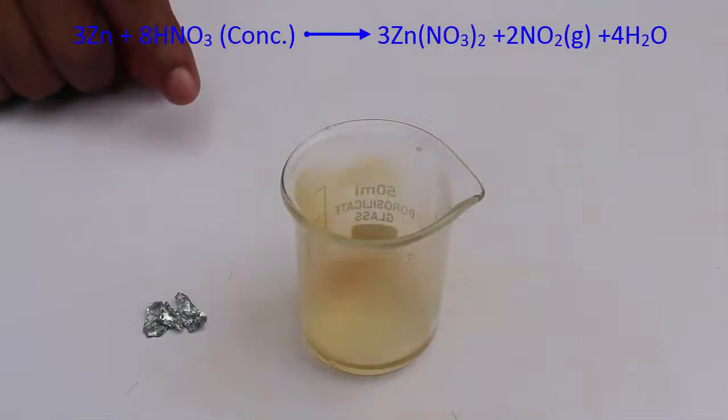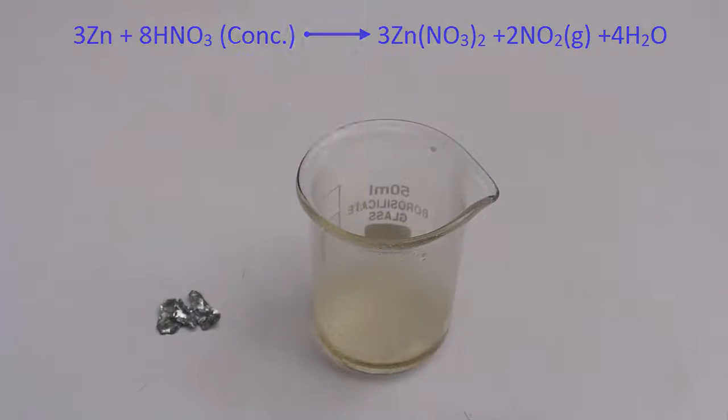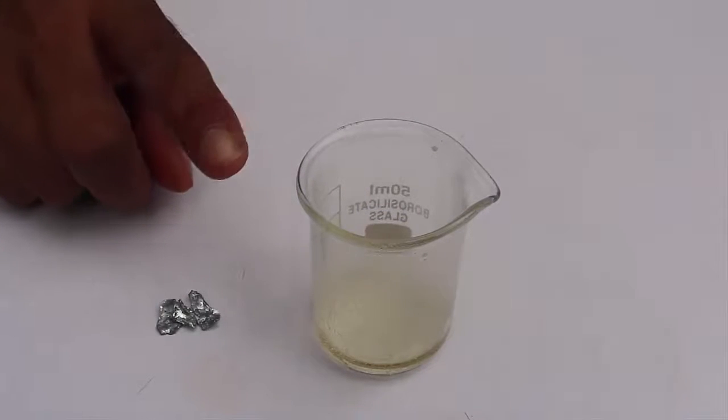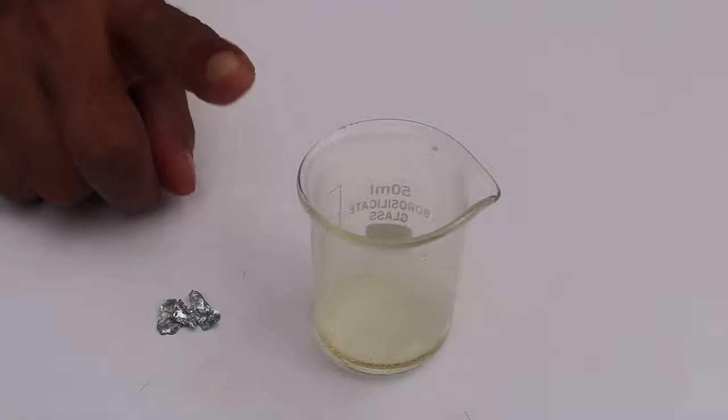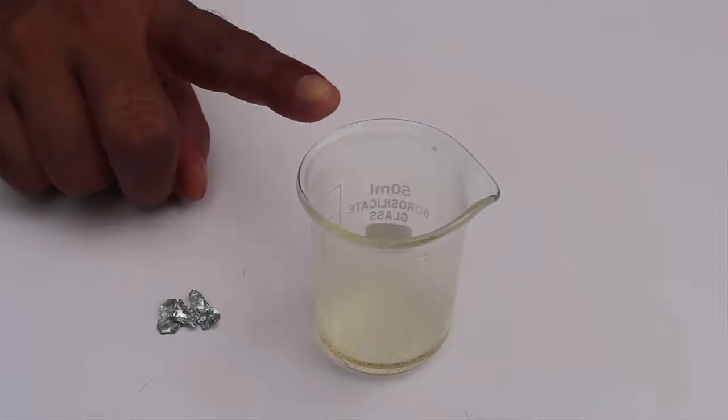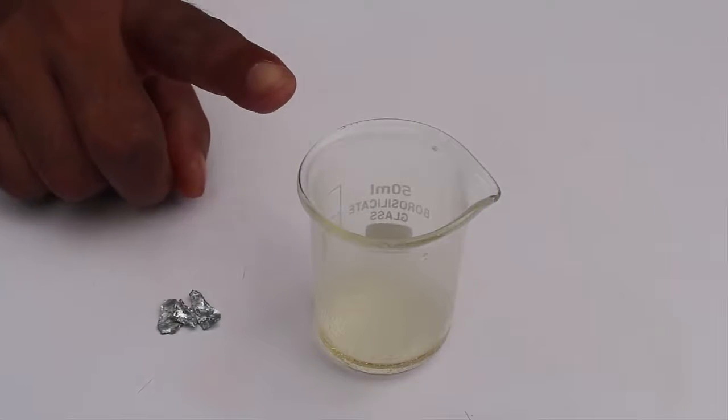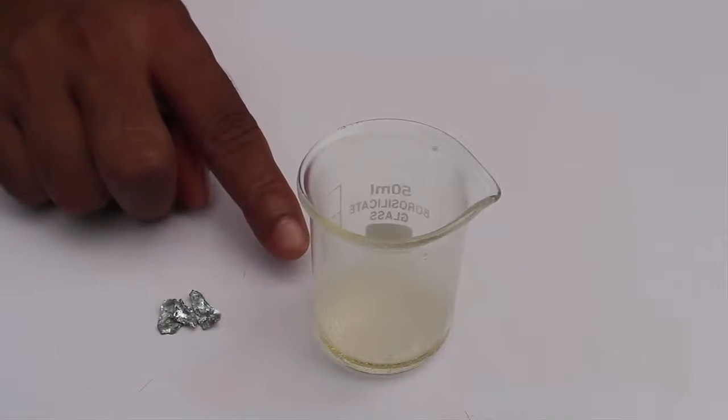Now this solution contains zinc nitrate salt. The gas which was evolved was nitrogen oxide. Since it is a gas, it escapes from the beaker. The solution at the bottom of the beaker contains the salt of zinc nitrate.